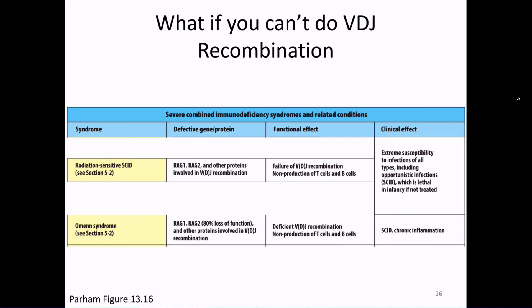There are patients who cannot do VDJ recombination — patients without RAG1, without RAG2, or without Artemis. They end up with different types of syndromes, sometimes called SCID or Omenn syndrome. They have no T cells and no B cells due to this failure of VDJ recombination, and in both cases have extreme susceptibility to all sorts of infections. You may have heard of bubble boy syndrome — that's where you have a complete absence of adaptive immunity and must be kept in a completely pathogen-free environment.